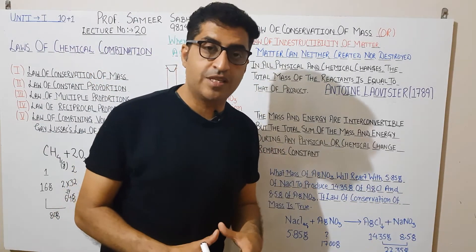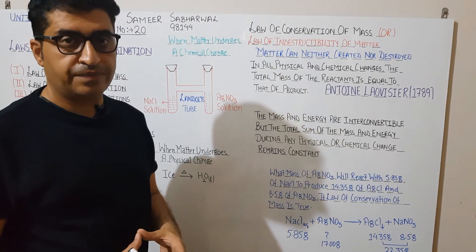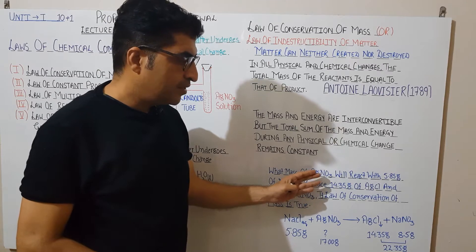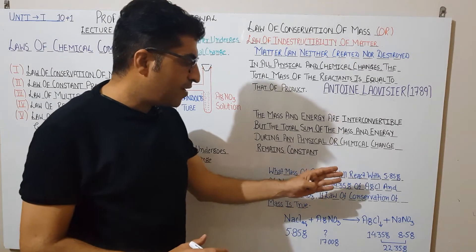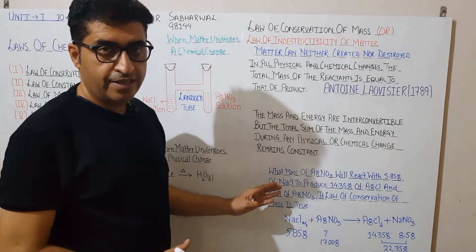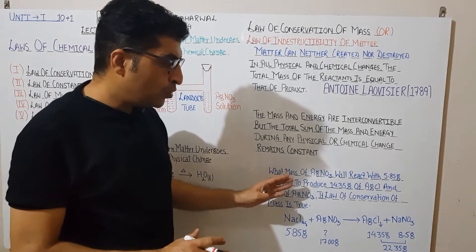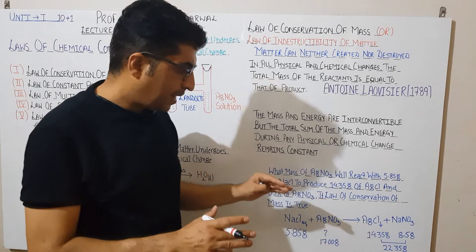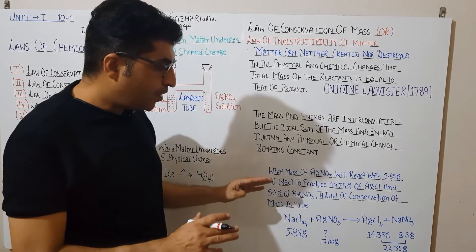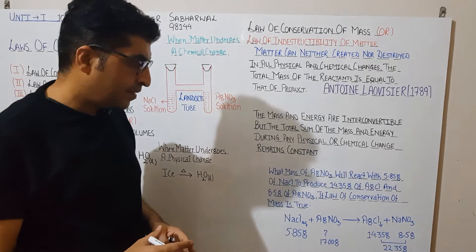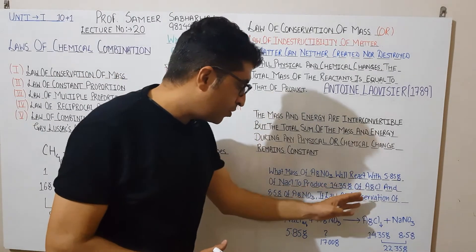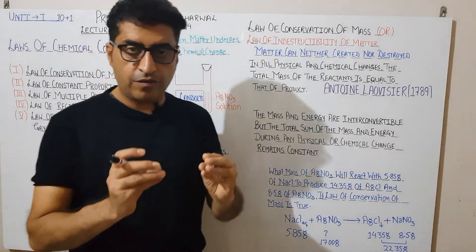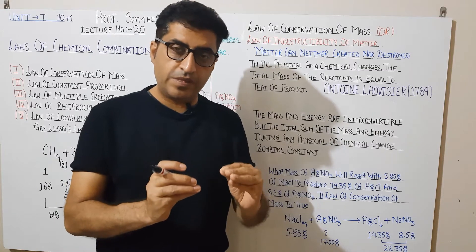Let's take a problem: What mass of silver nitrate will react with 5.85 grams of NaCl to produce 14.35 grams of AgCl and 8.5 grams of sodium nitrate, if the Law of Conservation of Mass holds true? Let's work through this example.